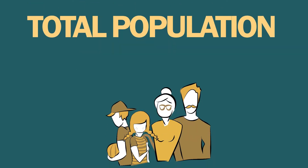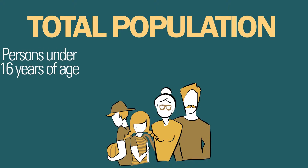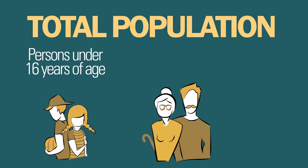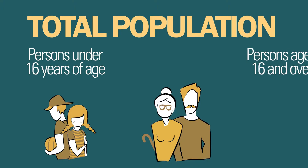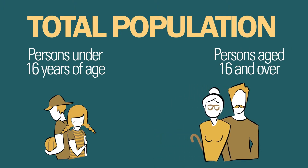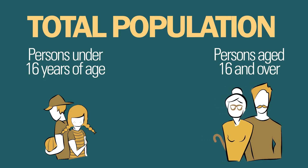First of all, we divide the total population into two large groups: persons under 16 years of age — those who are not old enough to work — and persons aged 16 years old and over.